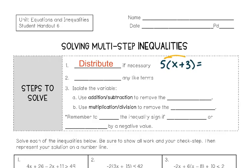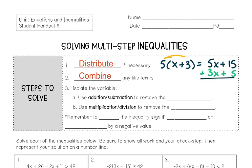There are a few key steps to solving multi-step inequalities. The first is to distribute if possible — that means if you see a number next to parentheses, you're going to multiply it to each of the terms on the inside of the parentheses. The next step is to combine any like terms that you see. Remember, like terms mean same variable, same exponent.